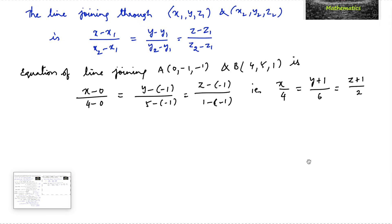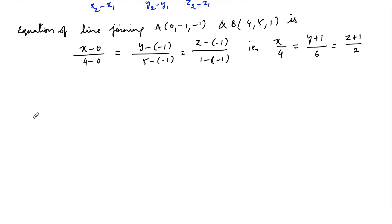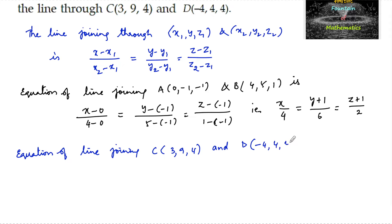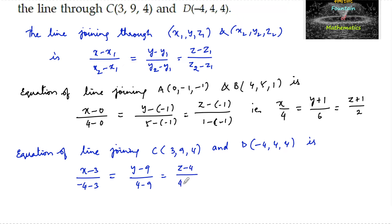Equation of the line joining C(3, 9, 4) and D(-4, 4, 4) is: (x - 3)/(-4 - 3) = (y - 9)/(4 - 9) = (z - 4)/(4 - 4), which simplifies to (x - 3)/(-7) = (y - 9)/(-5) = (z - 4)/0.